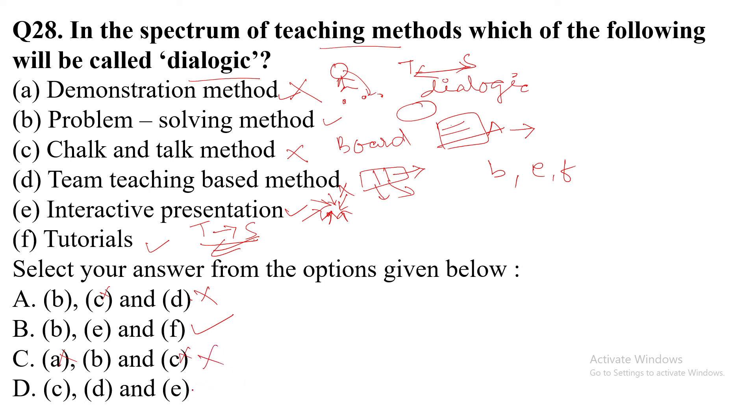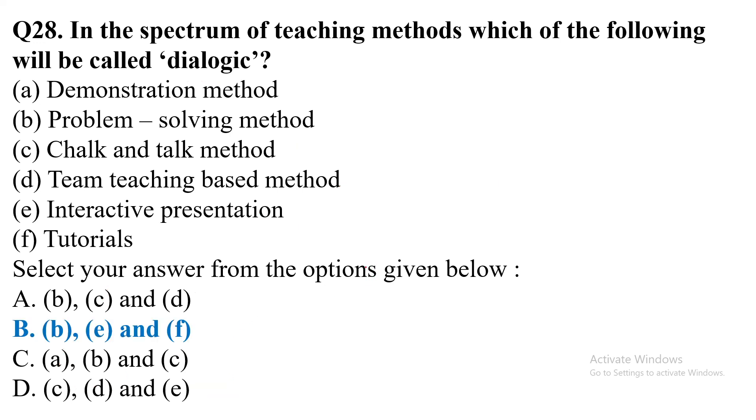Option D: C, D and E. Option D is also eliminated. The correct answer is option B: B, E and F. Thank you.